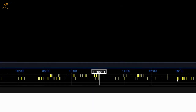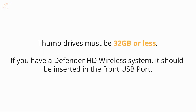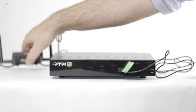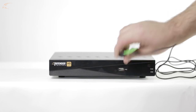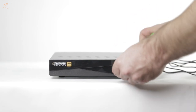Once you've found the footage you need to save, pause the footage and insert your USB thumb drive. This must be 32GB or less. If you have a Defender HD wireless system, the drive should be inserted in the front USB port. If the mouse is already connected, remove the wireless receiver and connect the mouse to the rear USB port.